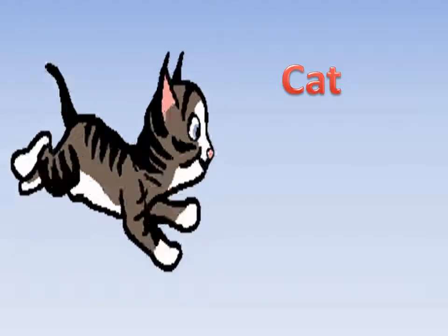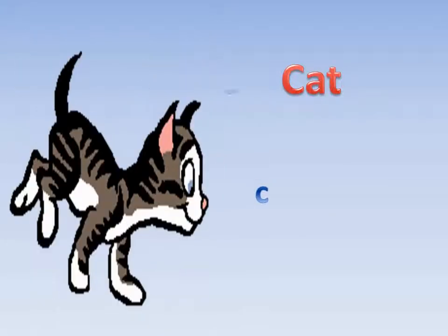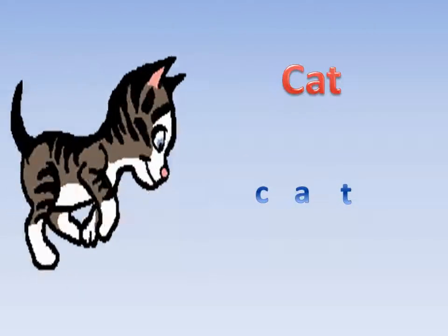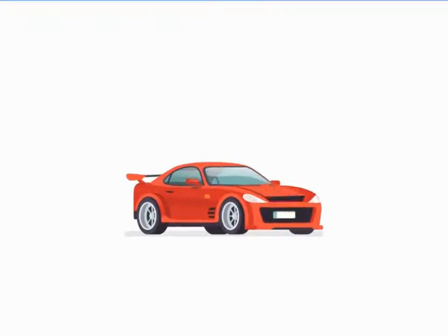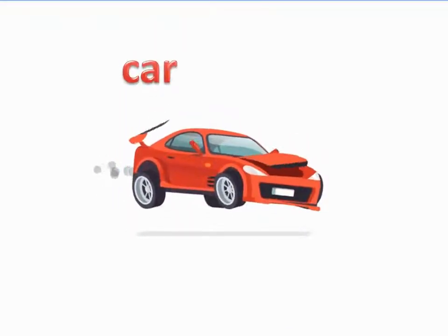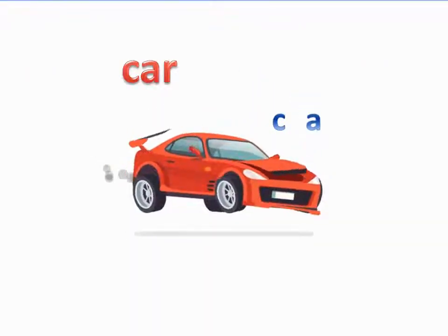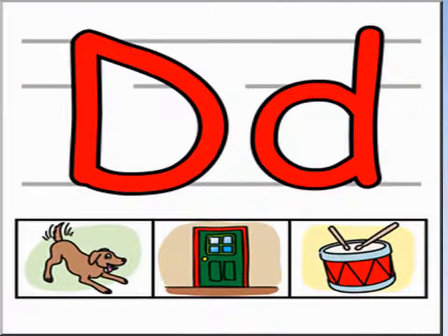What is this? It's a cat. Cat. How do you spell cat? C-A-T. Cat. Excellent! What is this? It's a car. Car. How do you spell car? C-A-R. Car. Excellent!